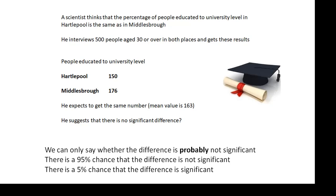Obviously it's all about probability. We can only say whether the difference is probably not significant. What we do is settle for a 95% chance. If there's a 95% chance that the difference is not significant — in other words, if there's a 5% chance that the difference is significant — we settle for that.